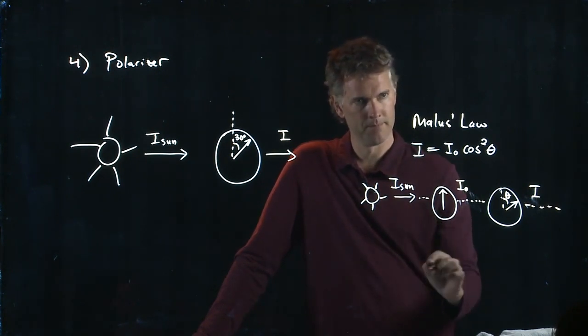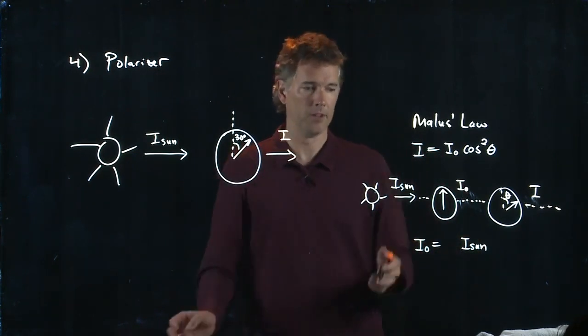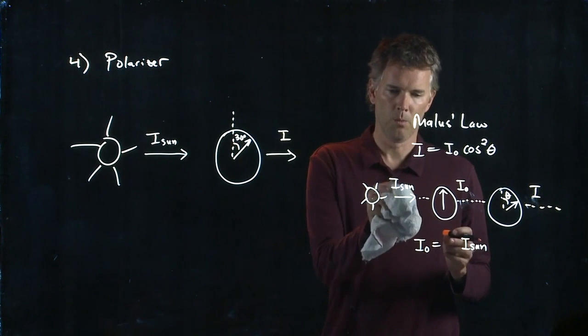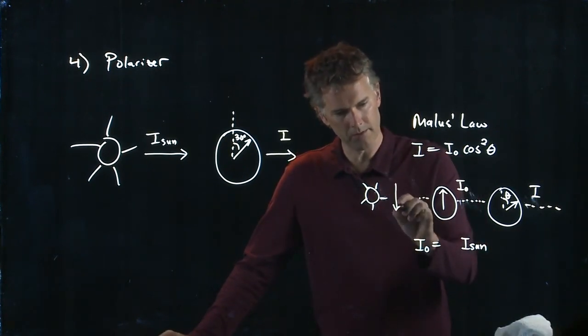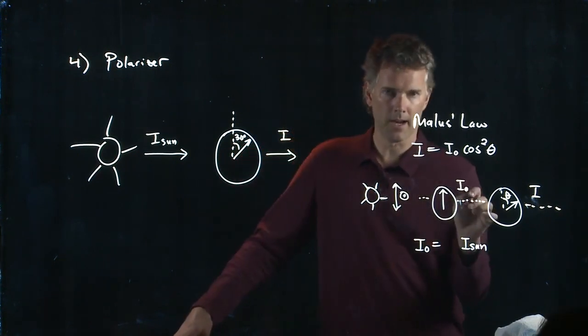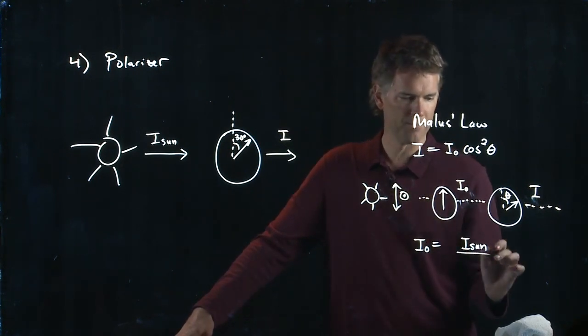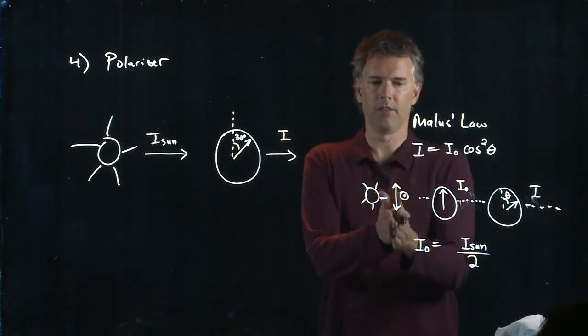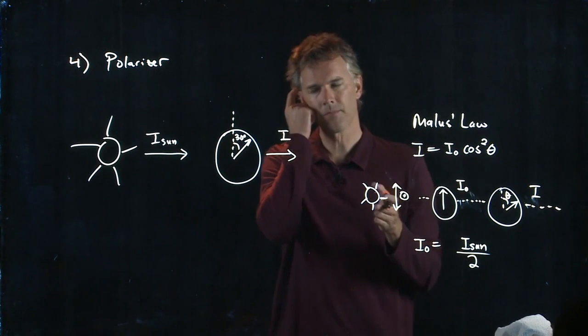But how much of I sun gets through that first polarizer to I naught? Do you remember what we did in class? There's some factor that I need to include here. Is it all of I sun that came through? Or is it some fraction of I sun that came through? Well, I sun is unpolarized. It has a polarization like this going up and down. But it also has a polarization like this going into and out of the board. This guy only picks out one of those. It picks out the vertical. It eliminates the horizontal. So what factor should I put here? A half. It's going to pick out half of the light. Right? Since this is vertical, that's half of the light. The other one, horizontal, gets extinguished at that first polarizer.